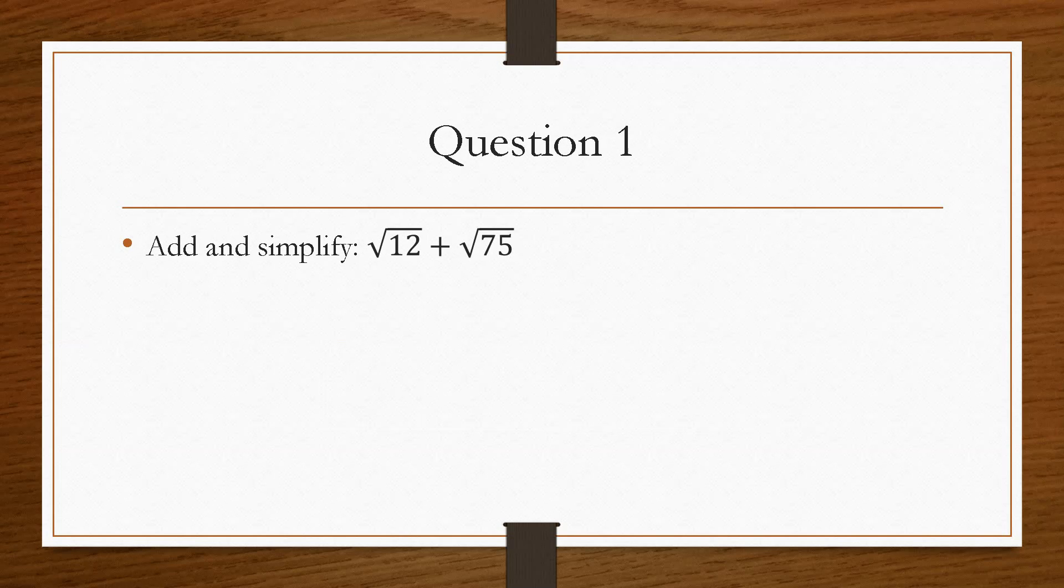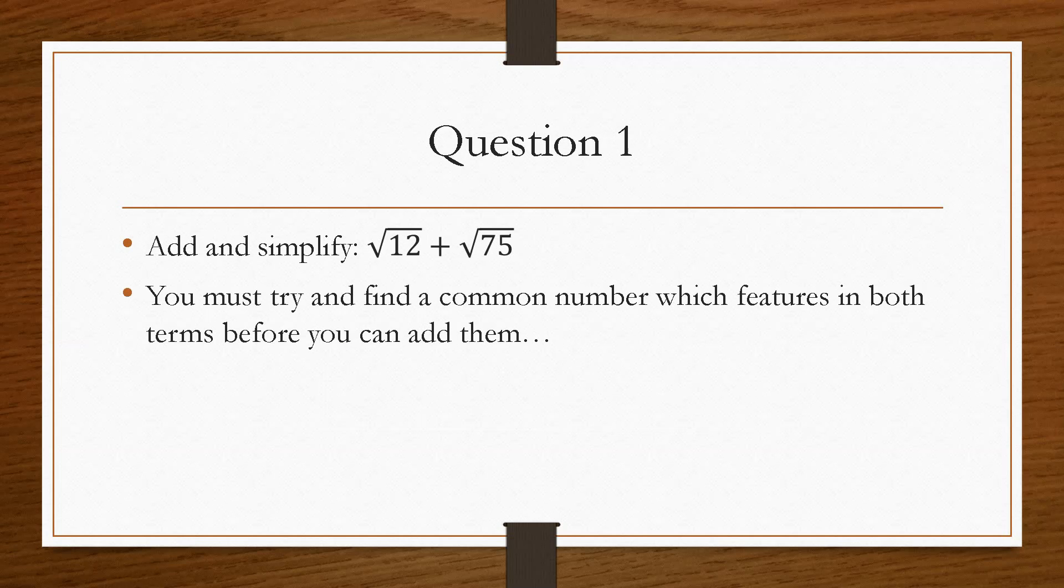So if we take a look at question number 1, it asks us to add and simplify root 12 plus root 75. So again, what we have to do is, in order to add these, they must have a number in common.